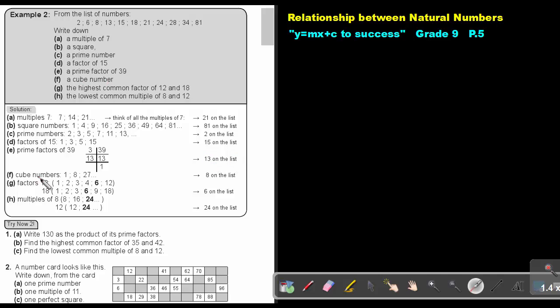Then cube numbers. What are cube numbers? 1, 8, 27. Which one is on the list? 8.